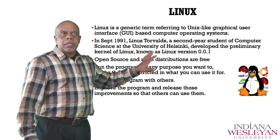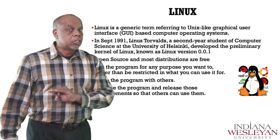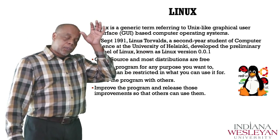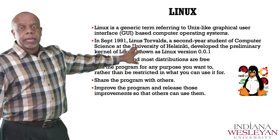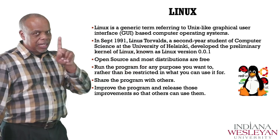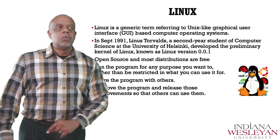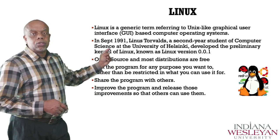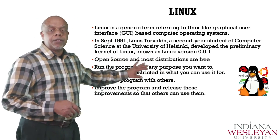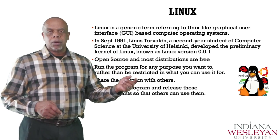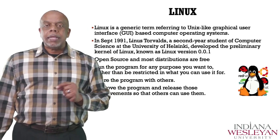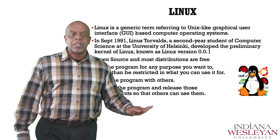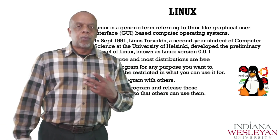Let's take a look at Linux. Linux is a graphical term that means Unix-like. It is not Unix — it's Unix-like. It is based on a GUI as well, a graphical user interface. How did it come about? In September 1991, Linus Torvalds — he was a second-year student at the University of Helsinki — developed the preliminary kernel, that Linux kernel, version 0.0.1. Linux is open source, which means that most of the distribution for Linux is free. You don't have to buy it. It's readily available.